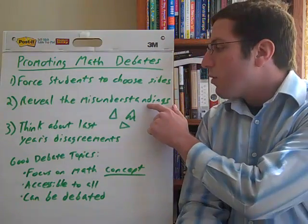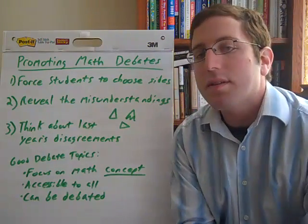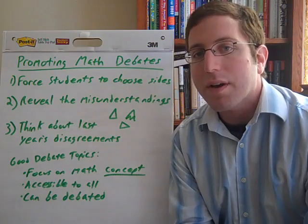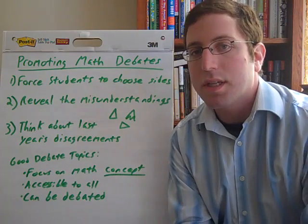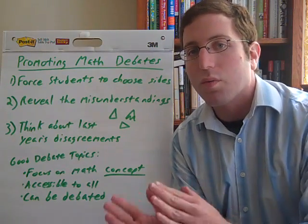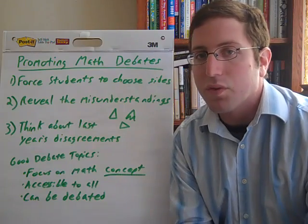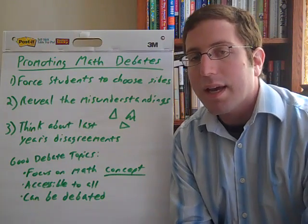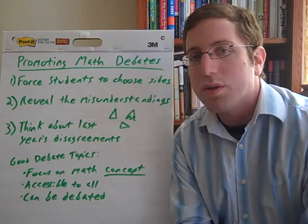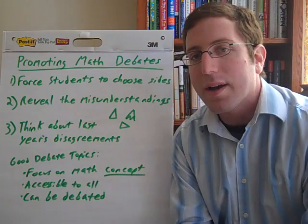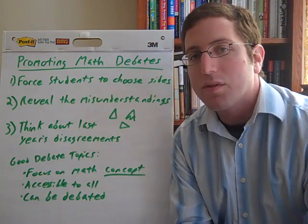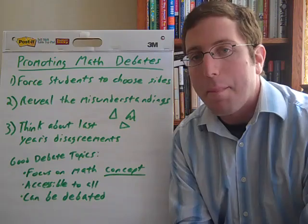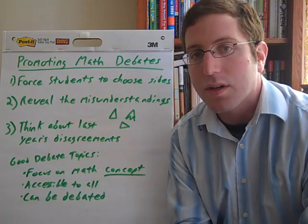The second thing is: reveal the misunderstandings. Usually when you're going to see a math debate, you're going to have a common misunderstanding that's causing students to go on the wrong side of things, and this goes for any age level of students. If you design activities that show students why their answer is wrong, they're going to come to it and really understand it a lot better than if you just tell them the right answer.